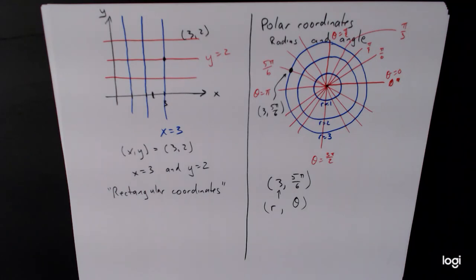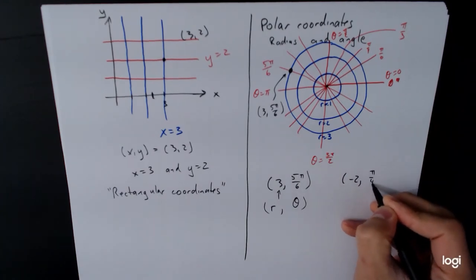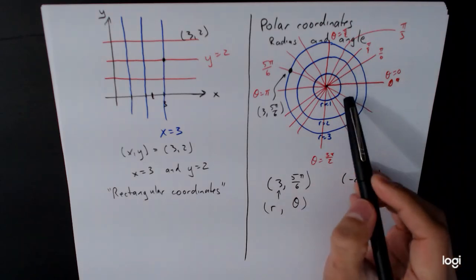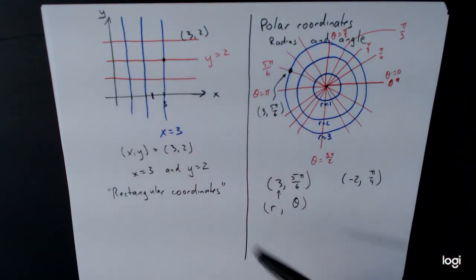Now with the radius, we can also use negative numbers. So we could have (-2, π/4). Now what would a negative radius be? Well, essentially what we're saying is that normally there's a positive direction, which is you go to the angle and you move outward. The negative number just tells you to move backwards.